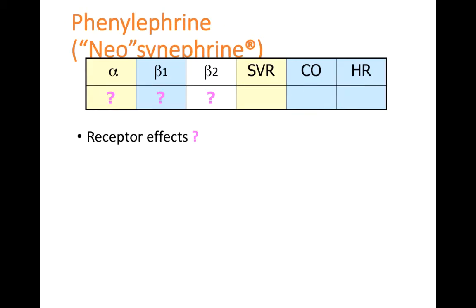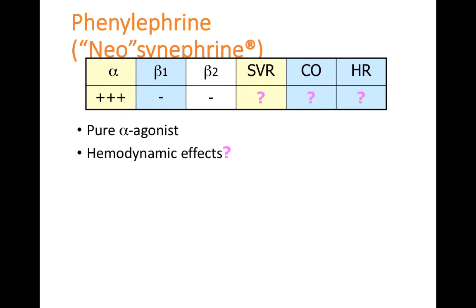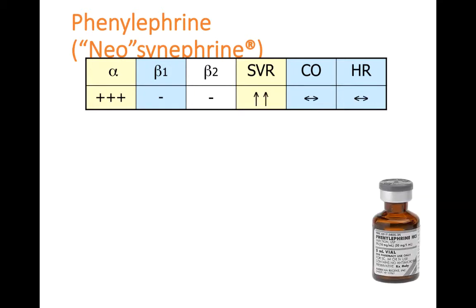Phenylephrine is the next agent, brand name Neosynephrine — commonly referred to in practice just as 'neo.' It is a pure alpha agonist with no beta-1 or beta-2 effects. Based on its alpha activity, phenylephrine primarily increases systemic vascular resistance as the main way it raises blood pressure. Because it lacks beta-1 or beta-2 effects, heart rate and cardiac output don't change very much.